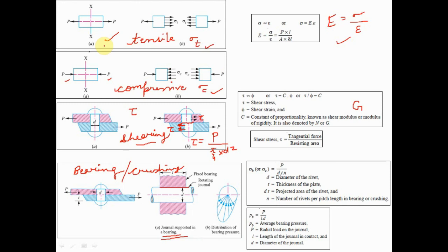Let's start with the video. In the first figure at the top, I have represented a pulling force P acting on a body. The internal resistance offered by the body in response to this external force P is called tensile stress, denoted by sigma_t. So when we have a pulling force, the stress generated is called tensile stress, denoted by sigma_t.